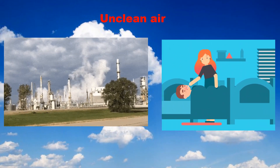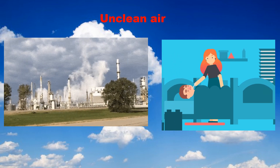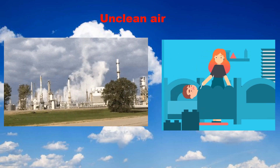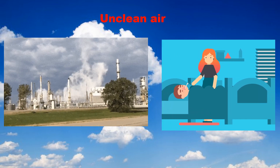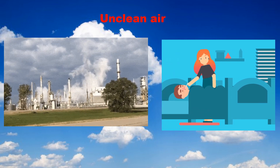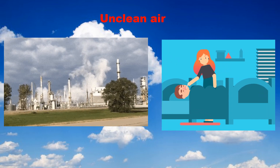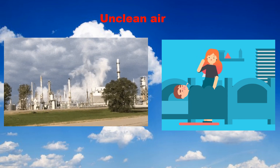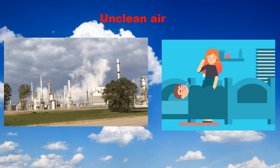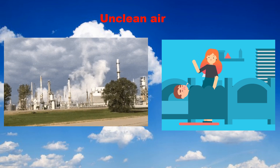Unclean air. Air contains many gases. Some gases like oxygen and nitrogen present in the air are useful to us. But there are some gases like carbon dioxide and methane present in the air that are poisonous and harmful. When harmful substances mix with the air, they make the air unclean, and this is called air pollution.